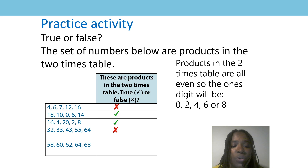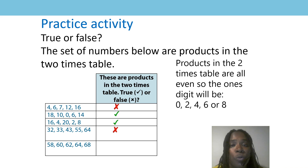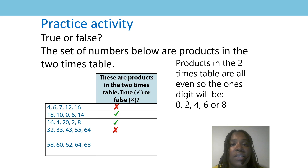Let's look at our final set of numbers: 58, 60, 62, 64, 68. Would that be a tick or a cross? Perfect! In the ones digits they all have either 0, 2, 4, 6, or 8. So these are products we would definitely find in our two times table because they are all even. Great job!